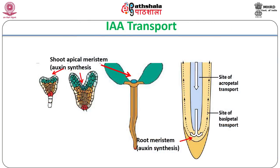Auxins show polar transport along the apical-basal axis of the plant. In early embryogenesis, synthesis of IAA takes place in the shoot apical meristem region and it is transported basipetally to the basal part of the embryo, which later organizes into the root apical meristem.